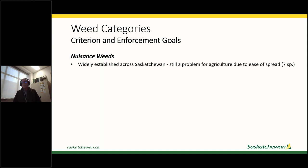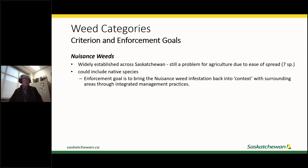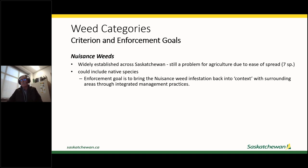The nuisance category includes weeds that are widely established across the province but still spread rapidly from one parcel to the next. There are only seven species in this category, and it can include native species — that's why foxtail barley is here rather than in the noxious category. The enforcement goal is to bring nuisance weeds into the same context as surrounding land, whether through addressing negligence or changing the habitat so the weed loses its competitive advantage.